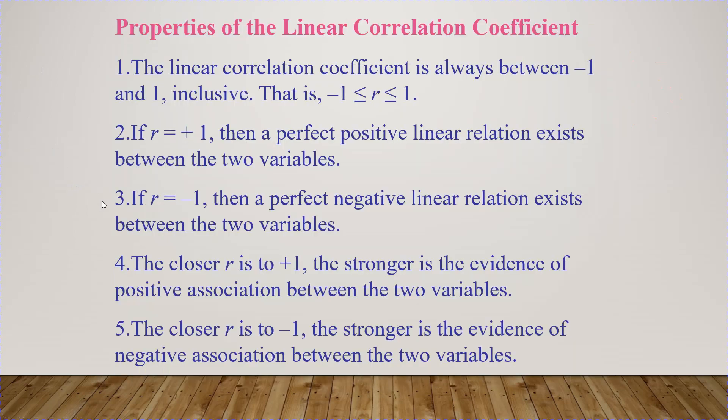Before showing the calculator steps, I want to talk about the properties of the linear correlation coefficient. This value r is always between negative 1 and 1 inclusive. When you see your calculator result, you'll never get a value like negative 5 or positive 15. r is always, always between negative 1 and 1 — that's really important.